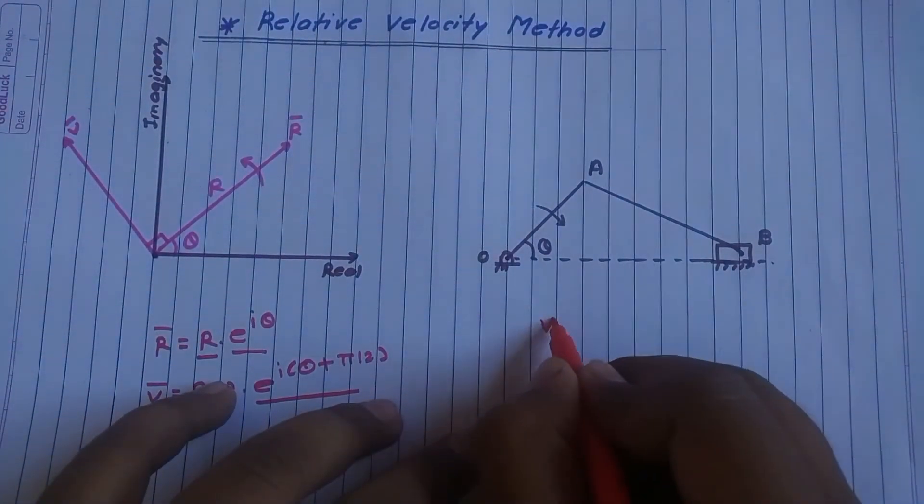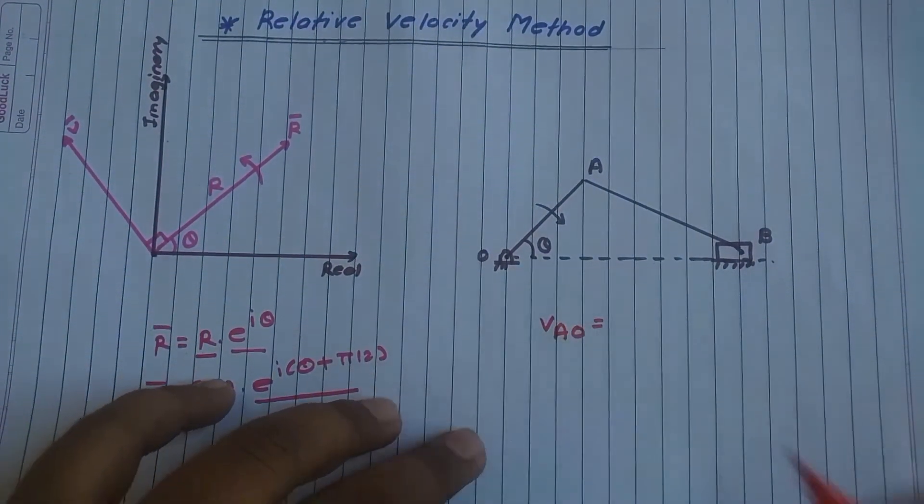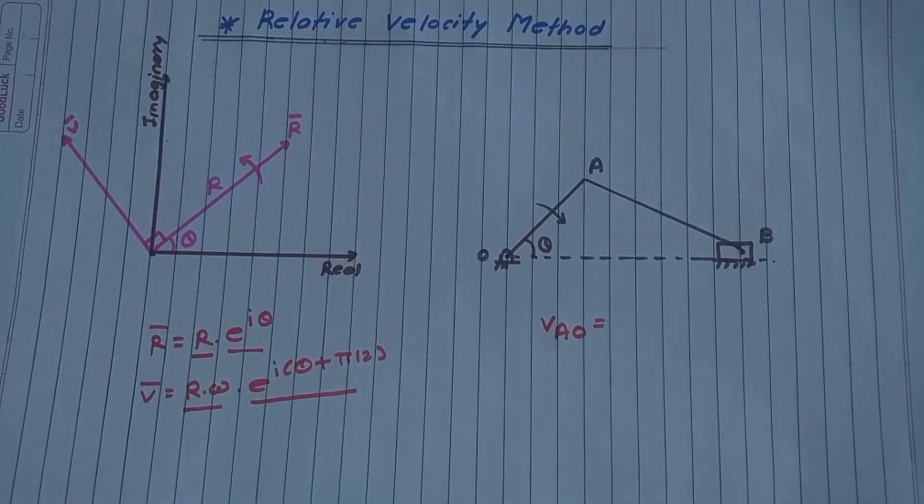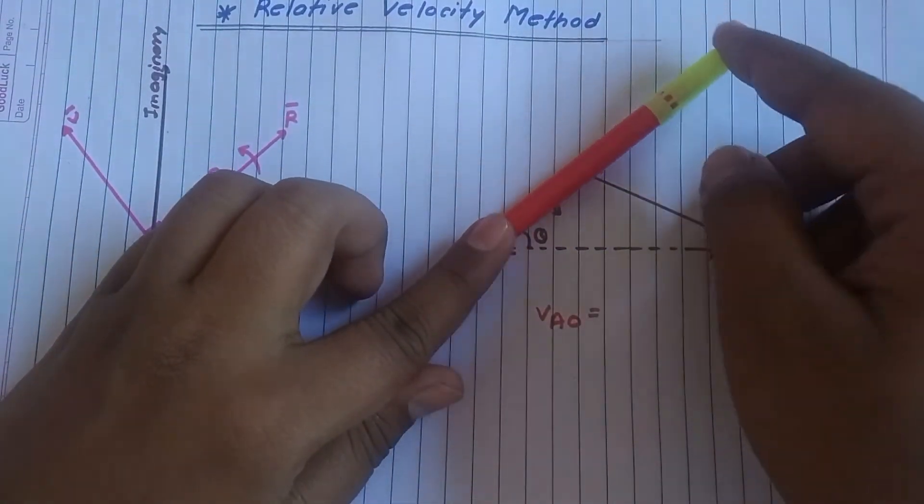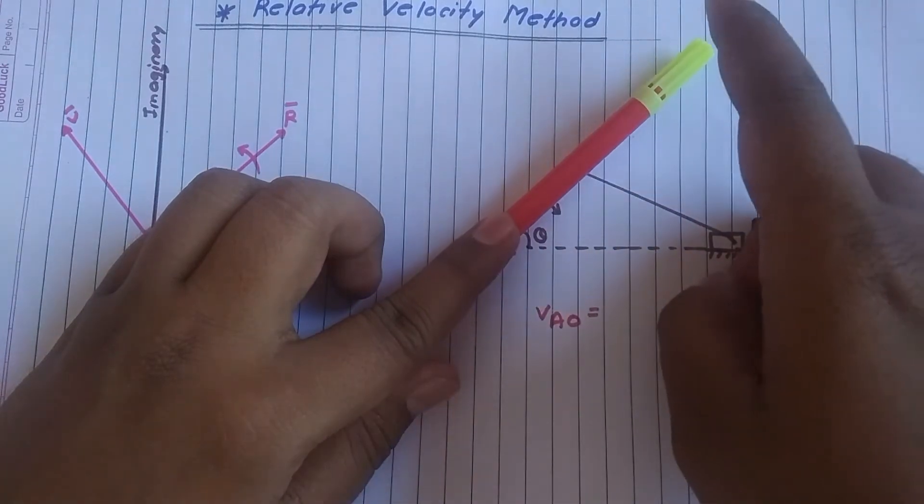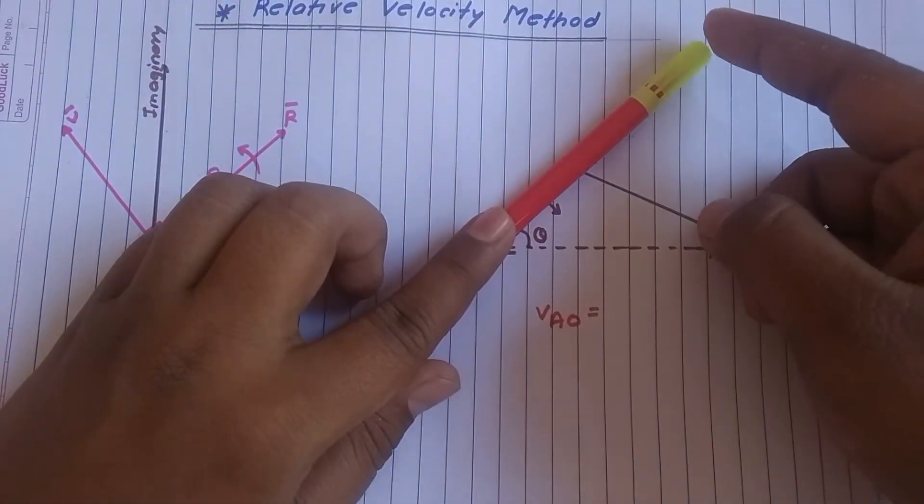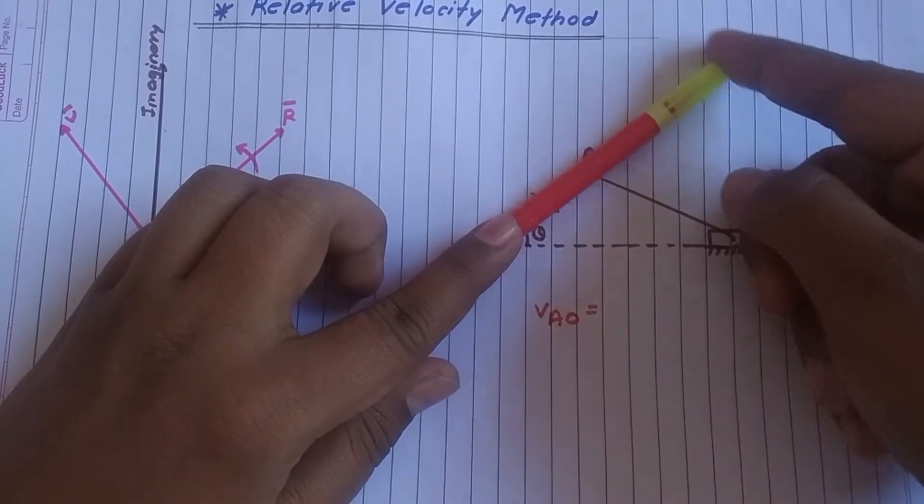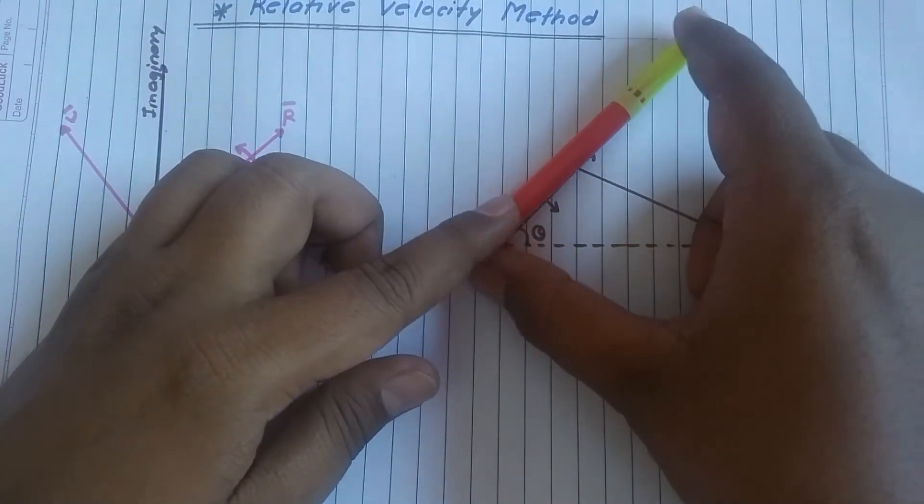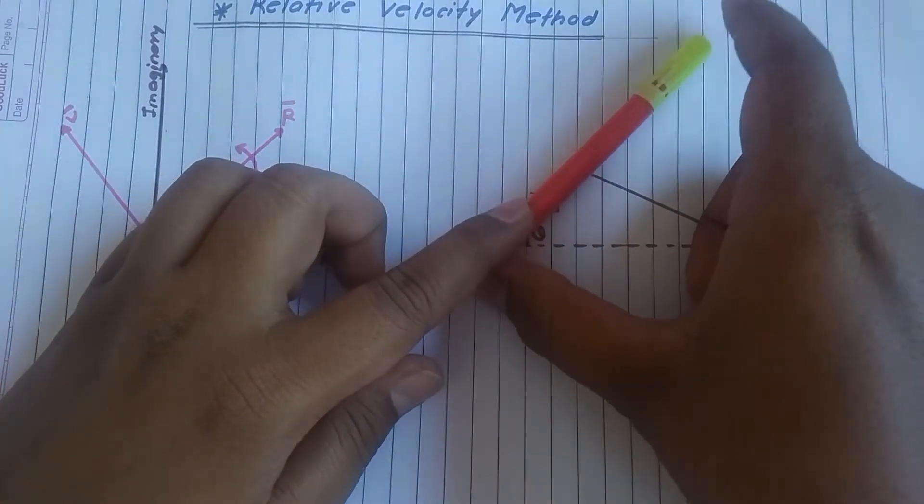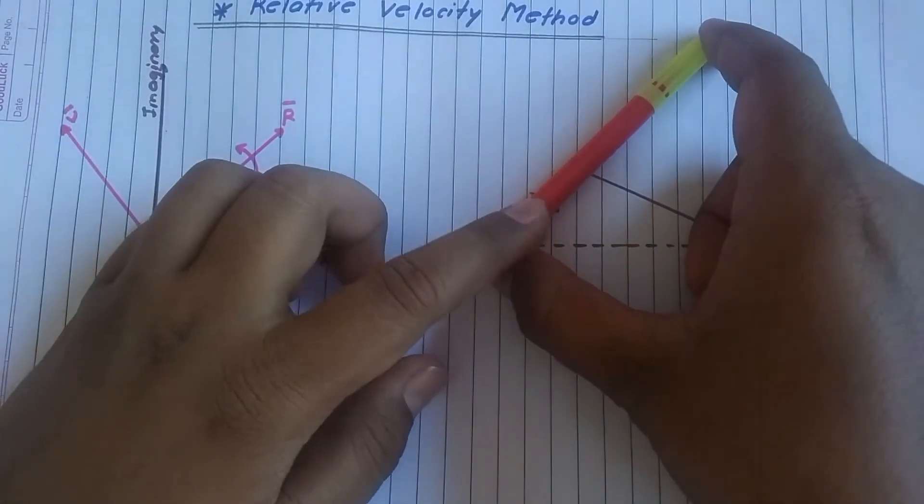It is written velocity of A with respect to O. So let us consider OA. This is OA. O is fixed, A is moving. So we want velocity of A with respect to O, means it is moving like this and both points are on the same link. So this distance remains same or crank distance will remain same always.